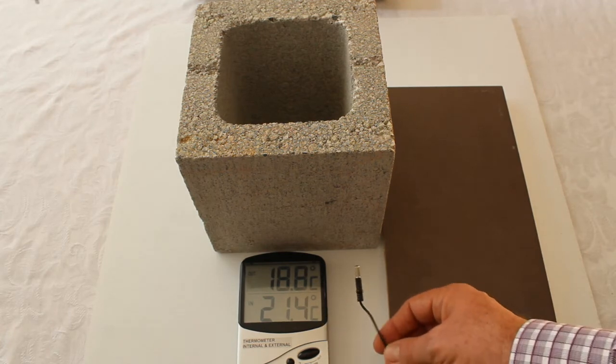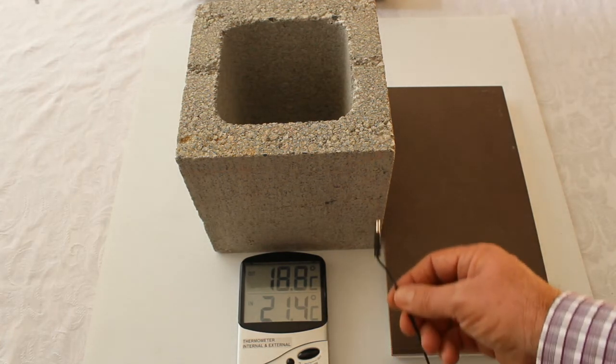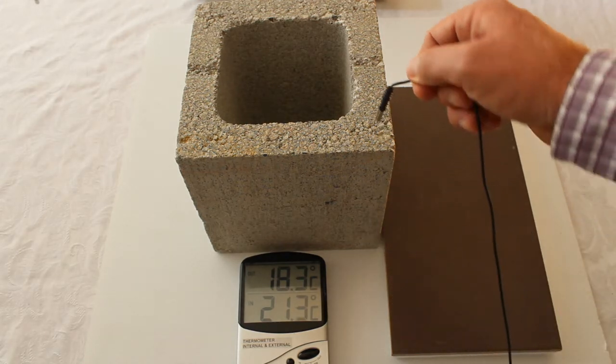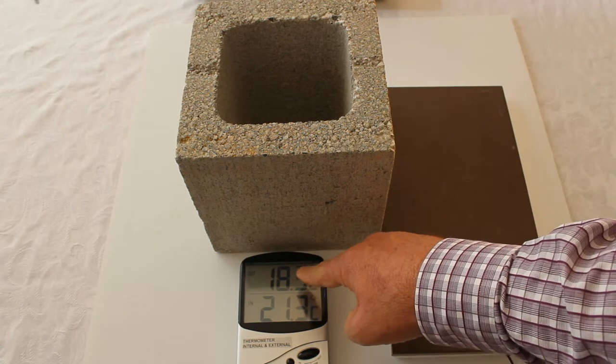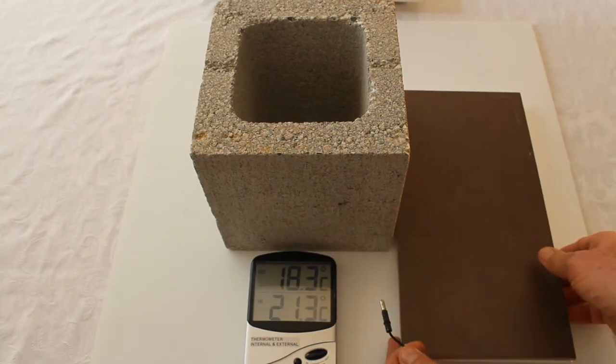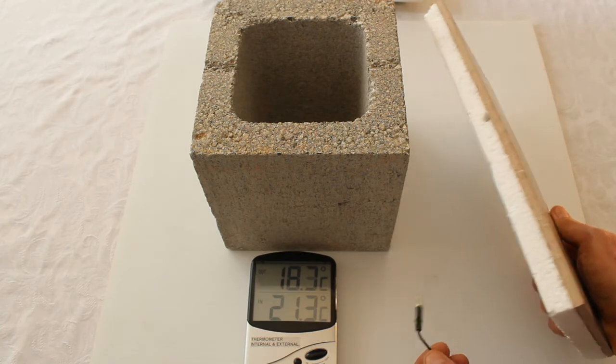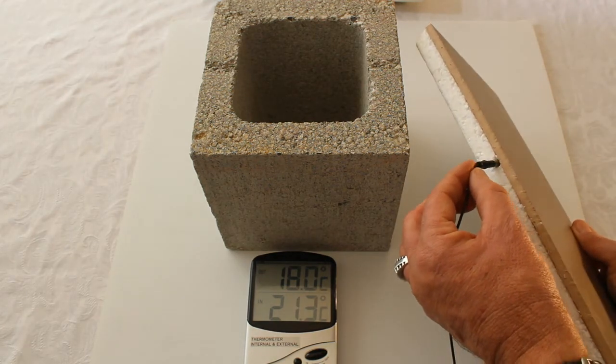This probe could be inserted. We could drill a hole and insert this into the brick and it would give us a different reading at the top. Here we have a hole specially made for the probe.